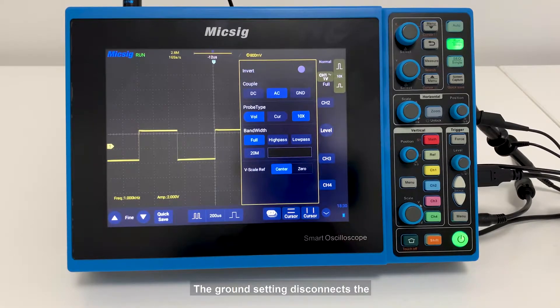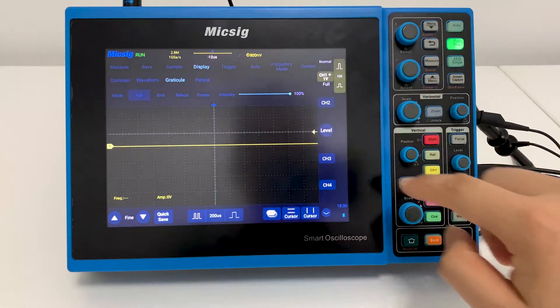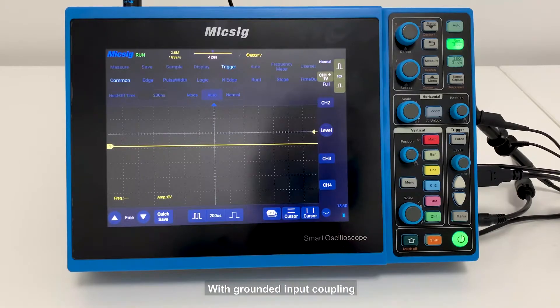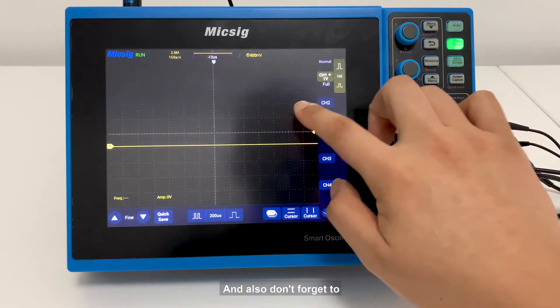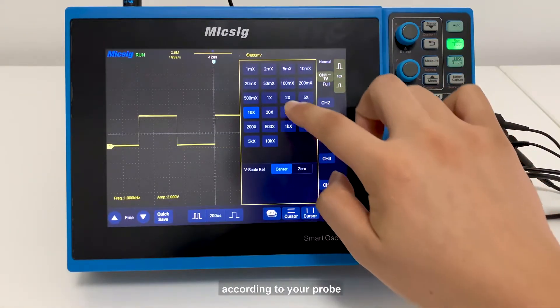The ground setting disconnects the input signal from the vertical system, which lets you see where zero volts is on the screen. With grounded input coupling and auto-trigger mode, you see a horizontal line on the screen that represents zero volts. And also don't forget to set the probe type and attenuation coefficient according to your probe.